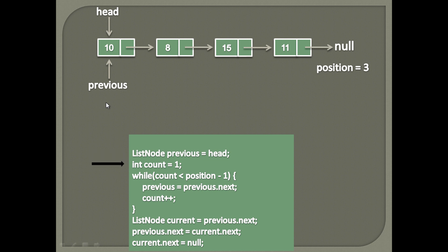In order to keep track of the number of nodes traversed, we create a count variable and initialize it to 1, because the first node is already traversed by the previous node. Next step is to execute a few steps in a while loop. The while loop executes till the previous node traverses to the node which is just before the position node. In our demo it's the second node.